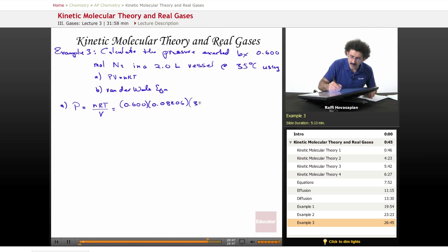And then, 308 Kelvin should be for 35 degrees Celsius. And our volume is 2.0 liters. We end up with 7.58 atmospheres. So, that's pretty high pressure.